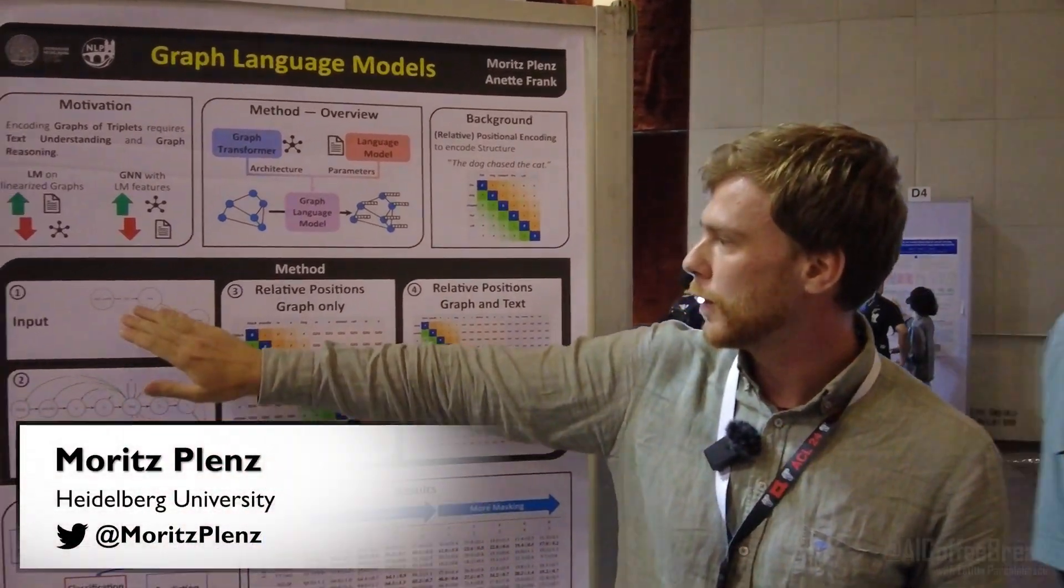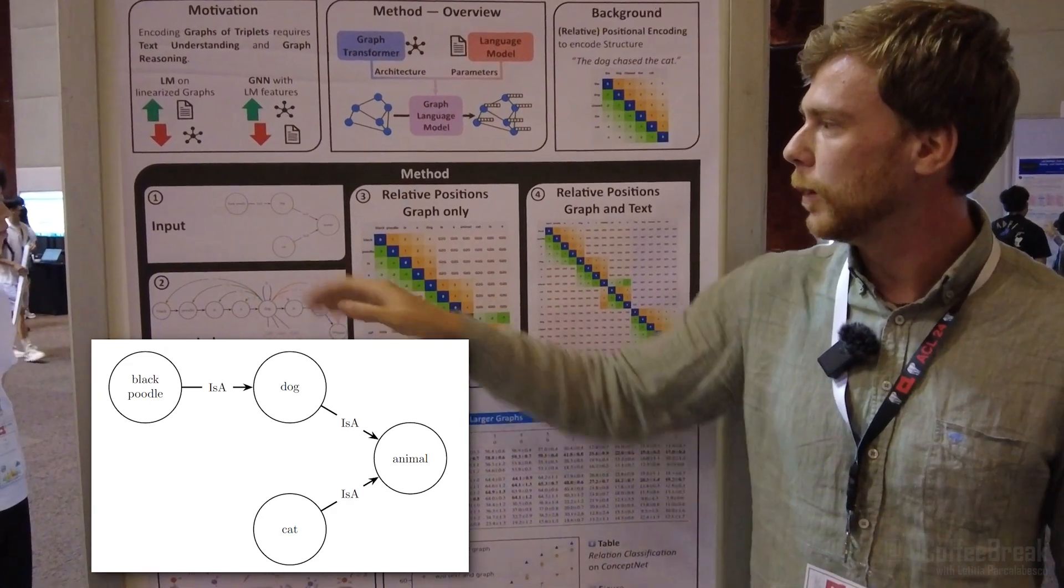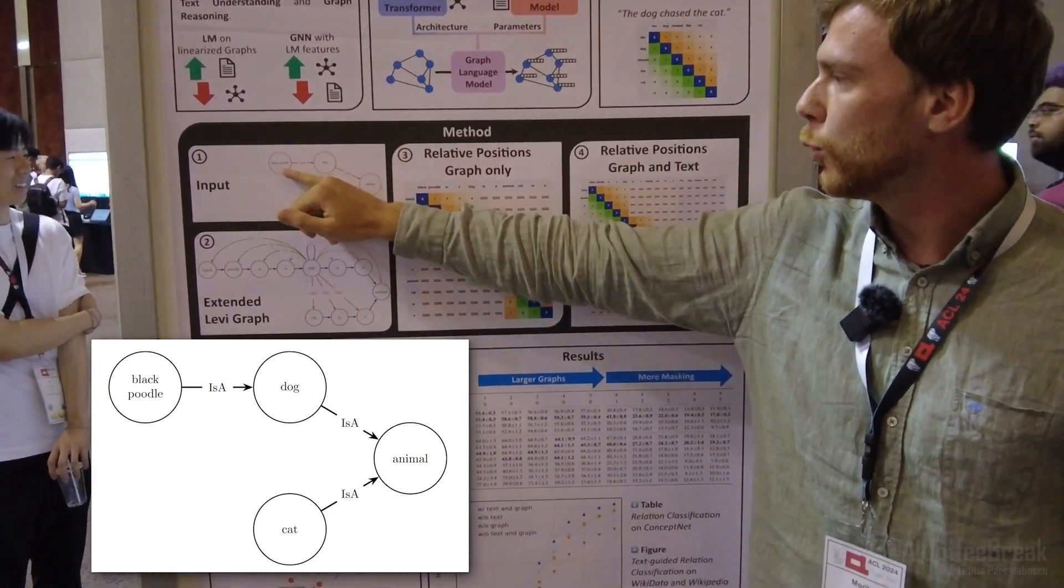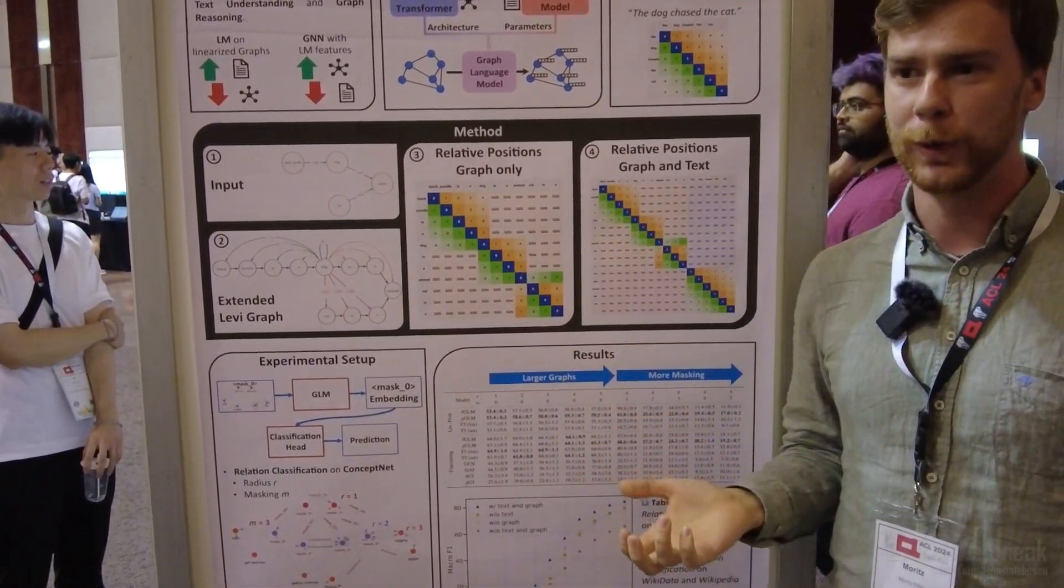Our motivation was that we deal with graphs like this here—typical knowledge graphs where both the nodes and the edges have text. If you look at an entire triplet, it's like 'black poodle is a dog,' which is a normal sentence. So you want to use a language model for such graphs just to encode the text.